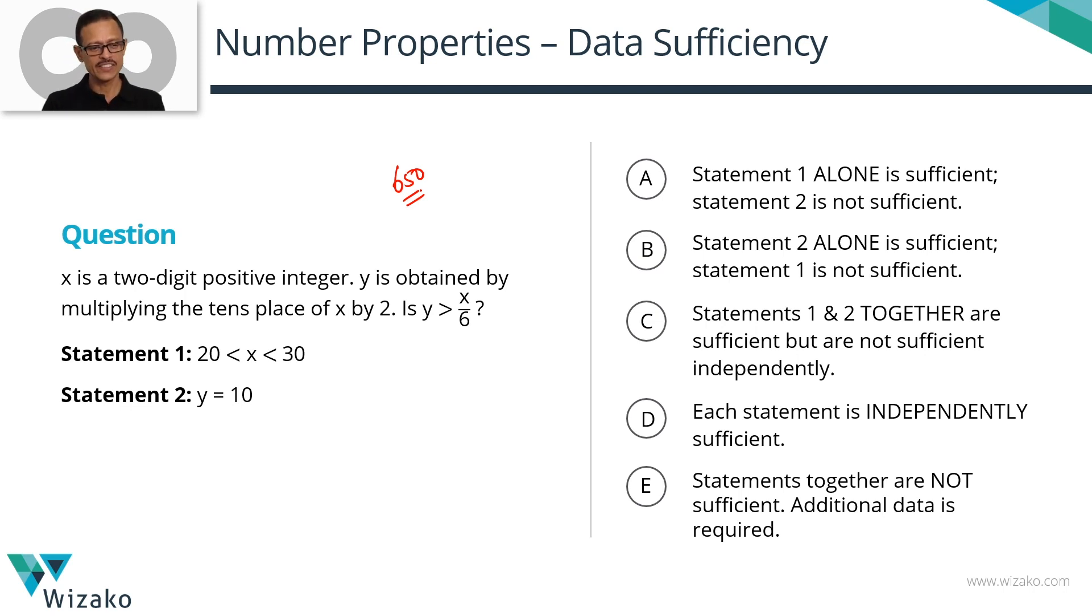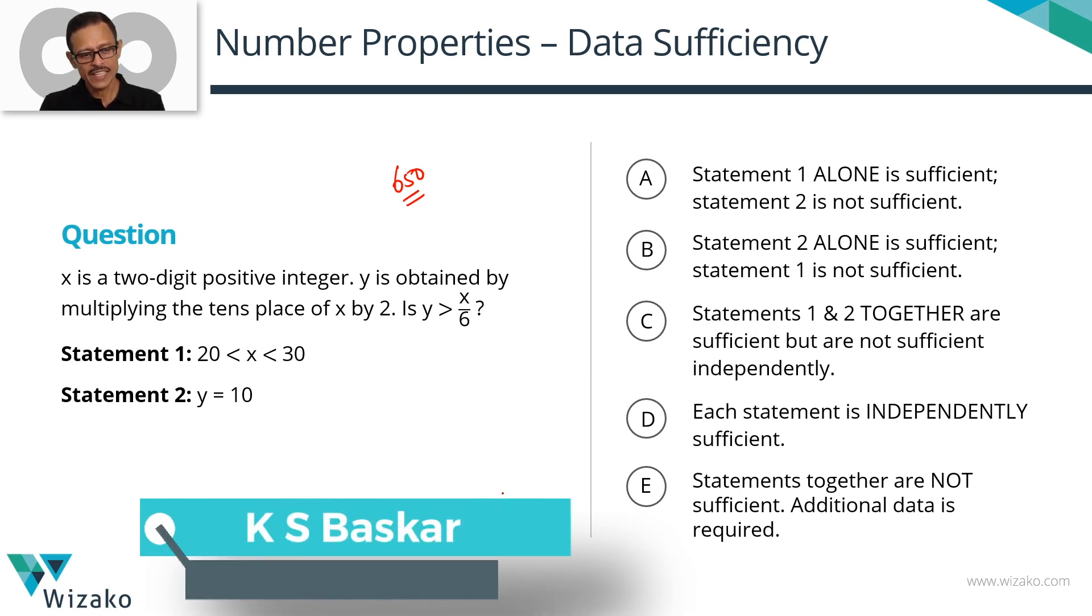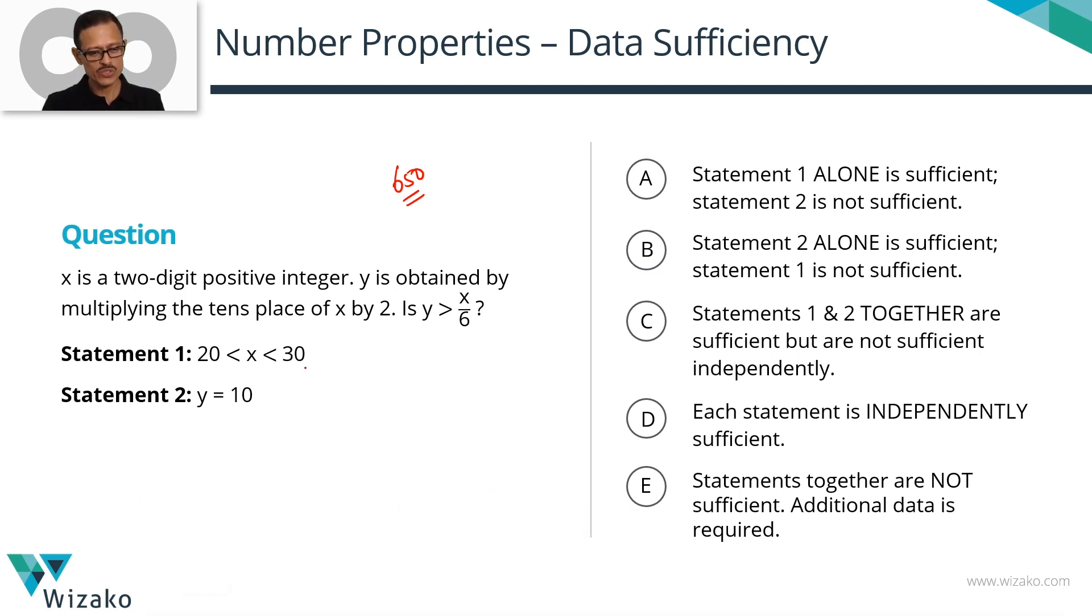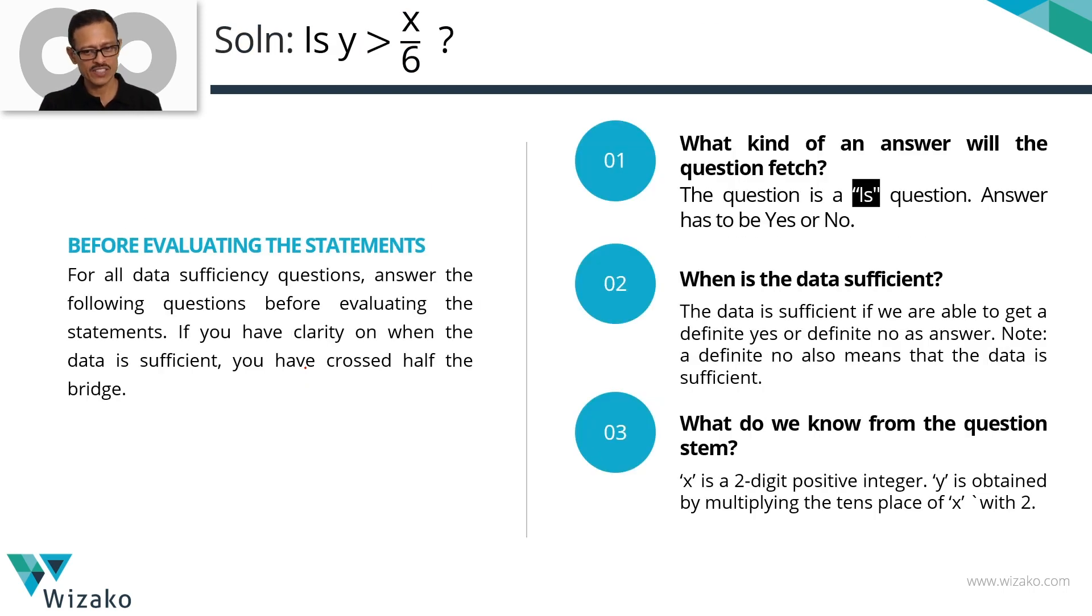X is a two-digit positive integer. Y is obtained by multiplying the tens place of X by 2. Is Y greater than X/6 is the question. We've been given two statements. Before we delve into the statements, let's quickly run through the three mandatory questions.